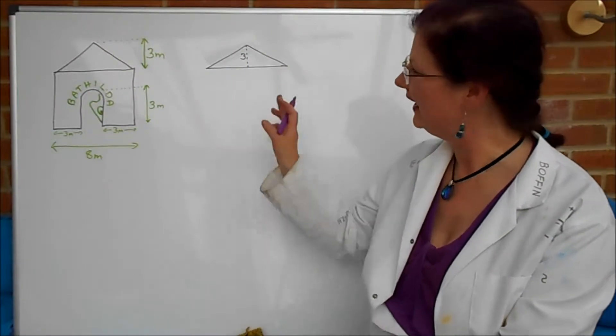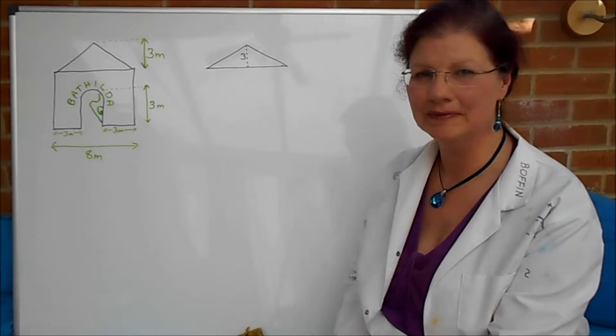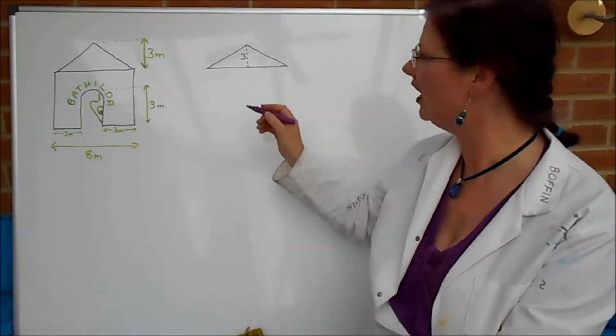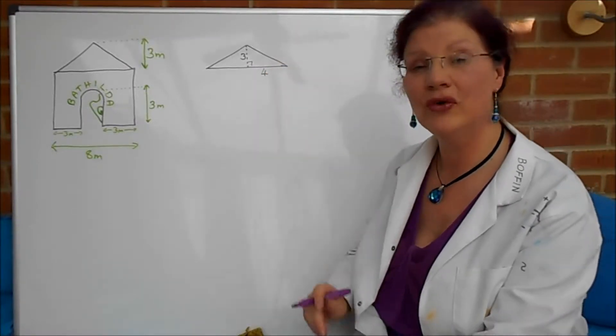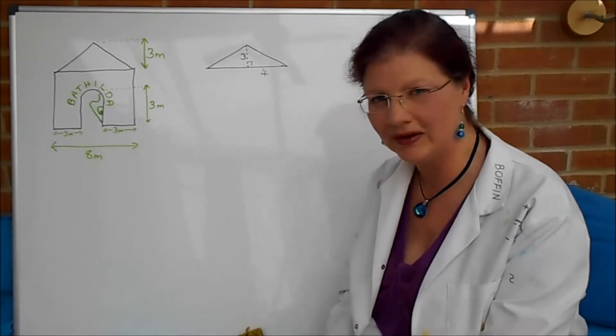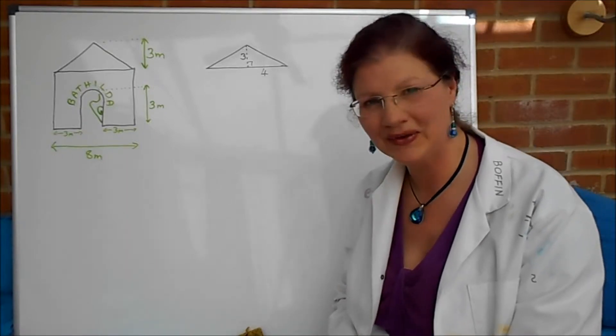Right here we go. I've drawn out her roof here and I've marked in three as the vertical height. Now of course it's a symmetrical house so that means that we can chop it in half and half of the width of the roof is four. The reason I've chopped it in half as you can see there we've got a right-angled triangle and with right-angled triangles we can do all kinds of nice things, including in this case Pythagoras.